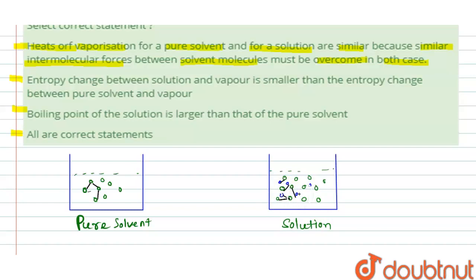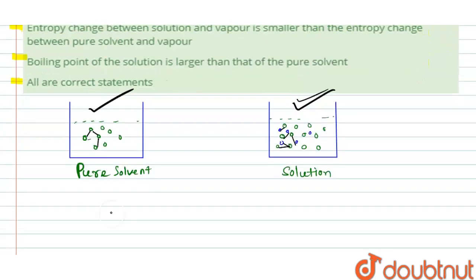However, the number of solvent molecules is large in solution, so there will be similar intermolecular forces between solvent molecules in pure solvent and in solution. Although there are slightly higher intermolecular forces in solution, that difference is negligible. Therefore, the heat of vaporization for a pure solvent and for a solution will be approximately equal. Hence the first statement is correct.